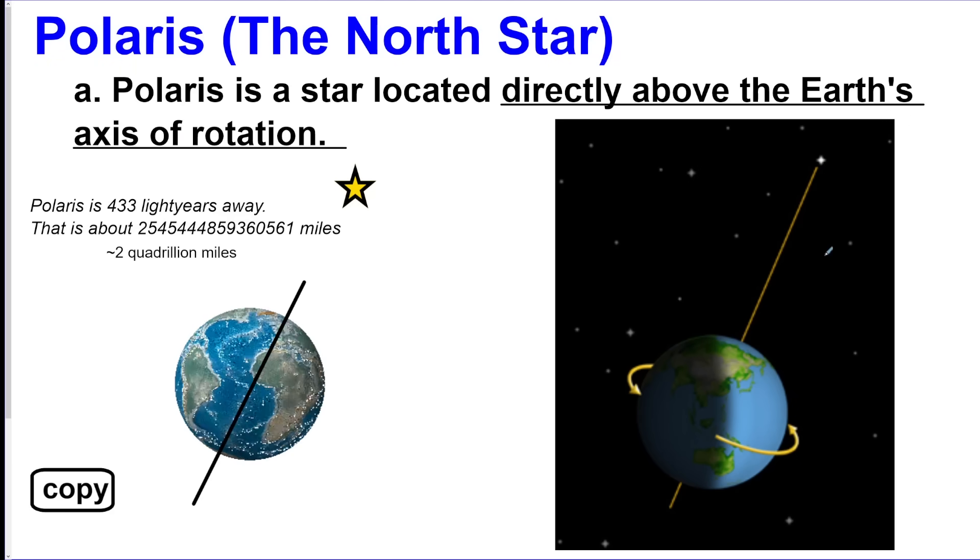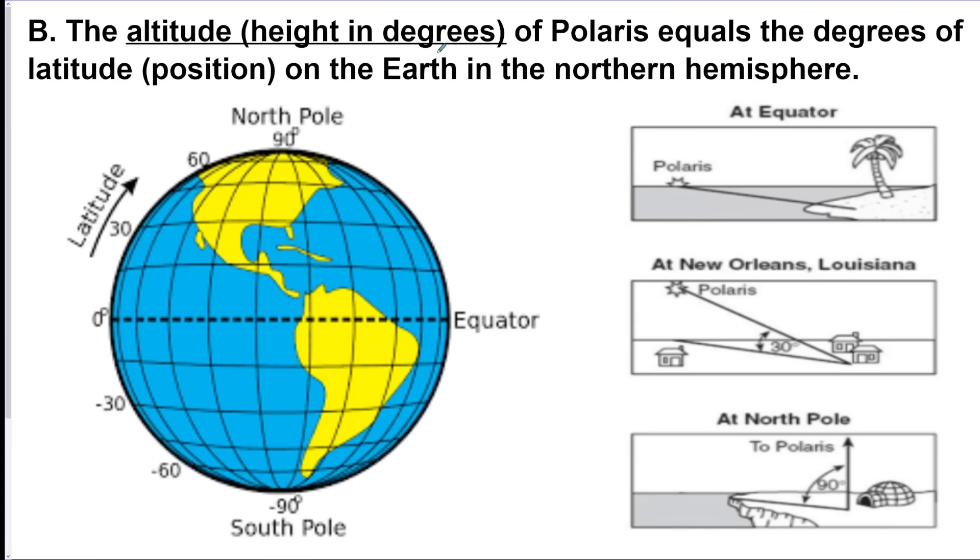We have Polaris, which is the North Star. It is located directly in line with the Earth's axis of rotation. As you can see in this picture, it directly lines up. And if you're standing at the North Pole, you would see Polaris directly above your head, so we use it for navigation and that will come up a little bit later. The altitude of Polaris is equal to your latitude. So if you are standing at zero degrees on the equator, Polaris is zero degrees high in the sky. If you're at 42 degrees, which is New York north, you would see Polaris at 42 degrees high in the sky.